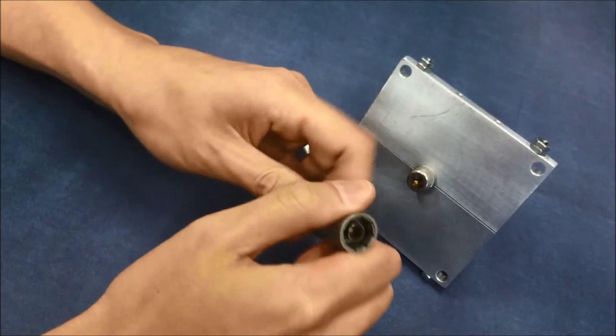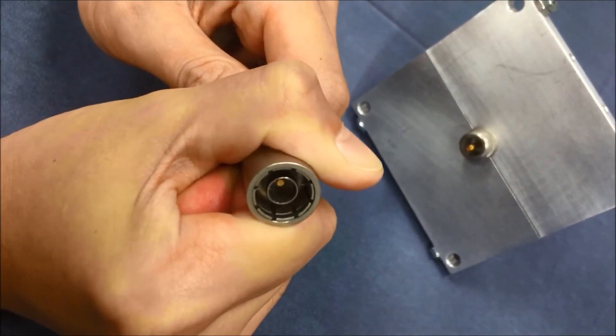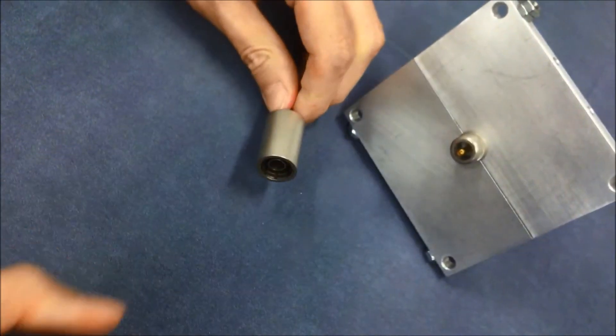This is the collet lock connection proprietary to Ball Seal Engineering and it's another example of custom connector configurations that can be designed for specific applications.